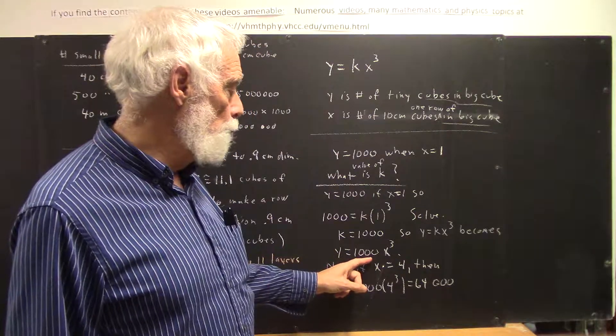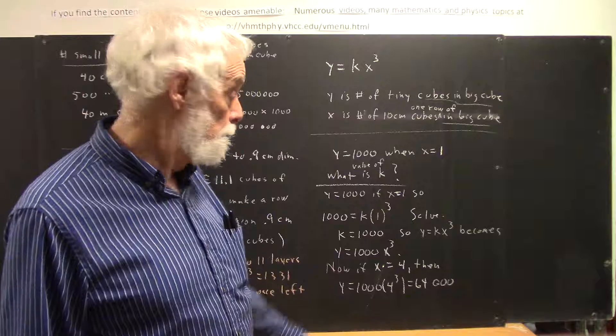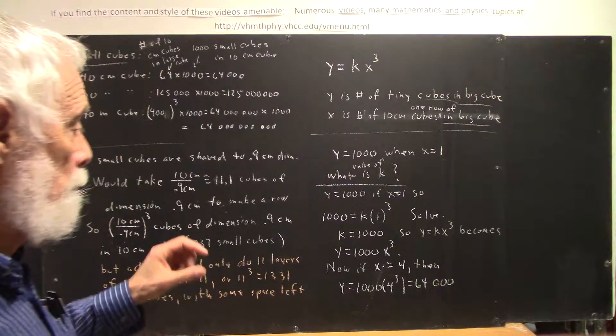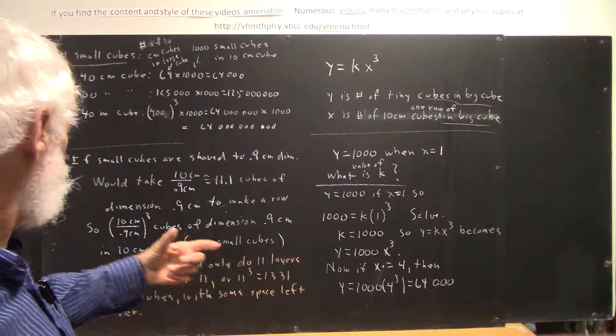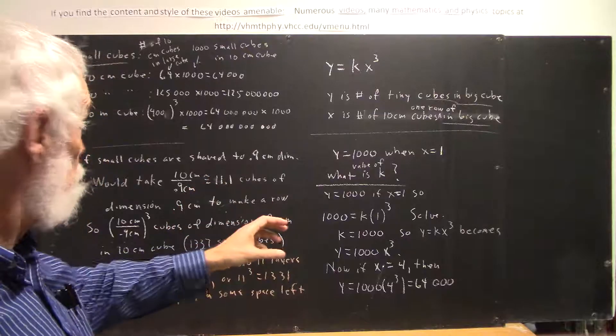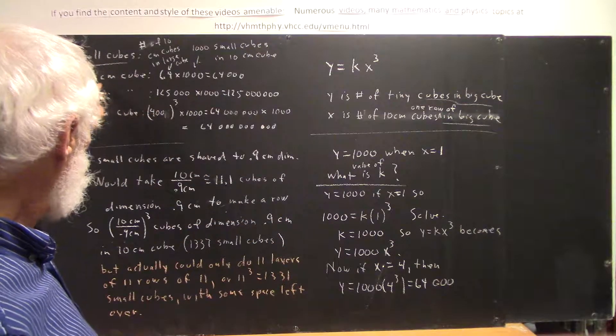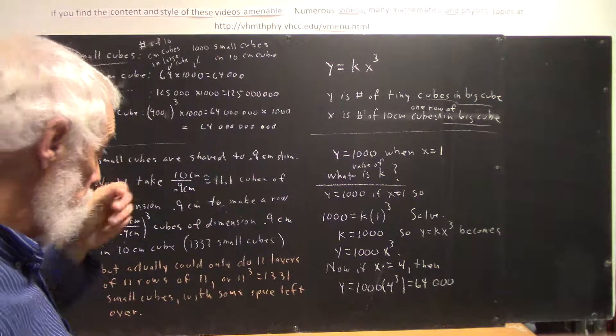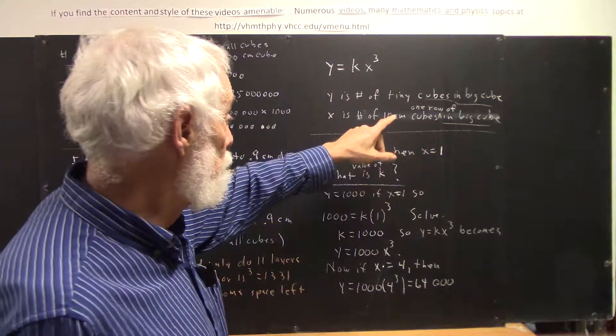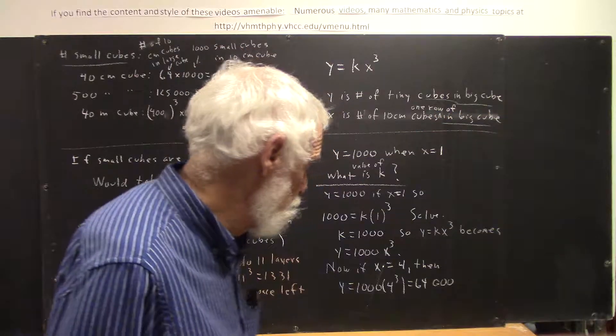So we got this equation, y equals a thousand x cubed. Now, if you want the number of tiny cubes in your 40 centimeter cube, you say it takes four 10 centimeter cubes to do one row of this 40 centimeter cube. So x would be four, since x is now the number of 10 centimeter cubes in one row of the big cube.